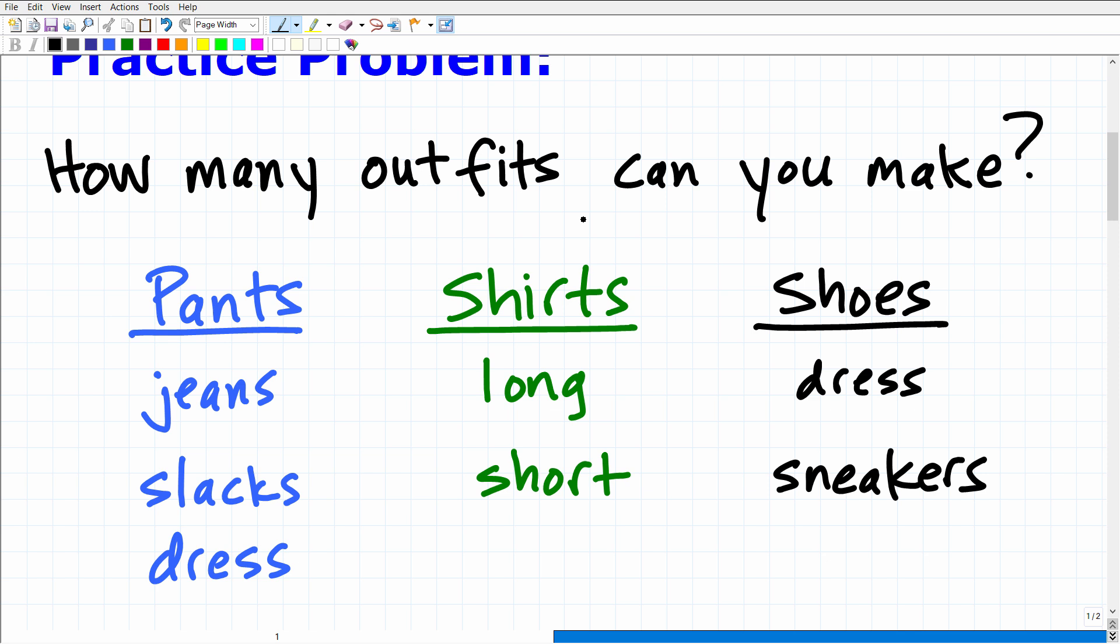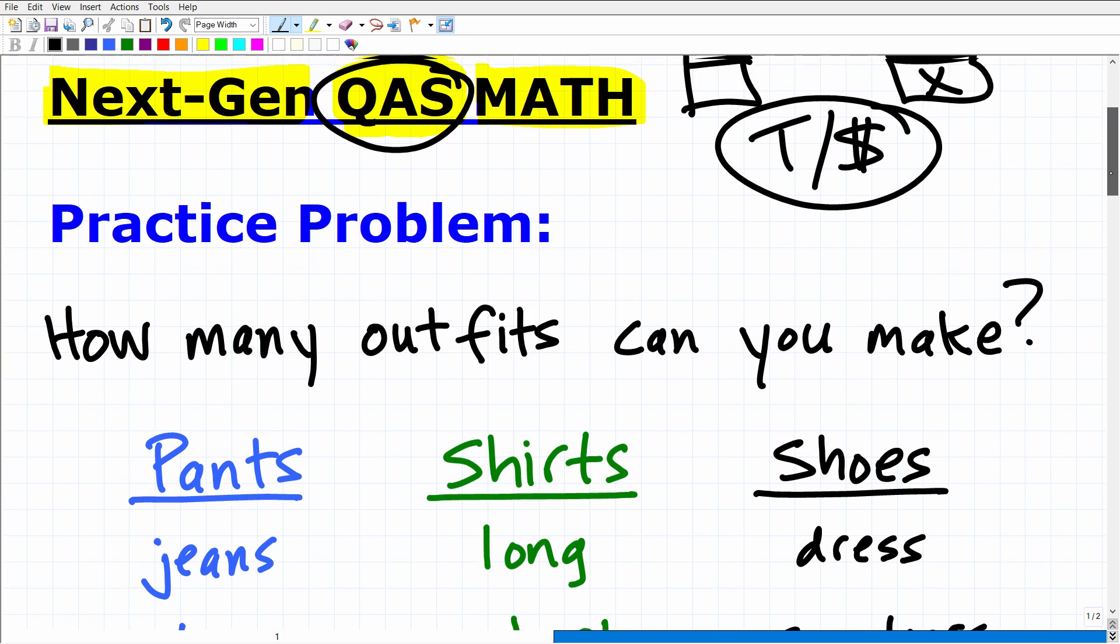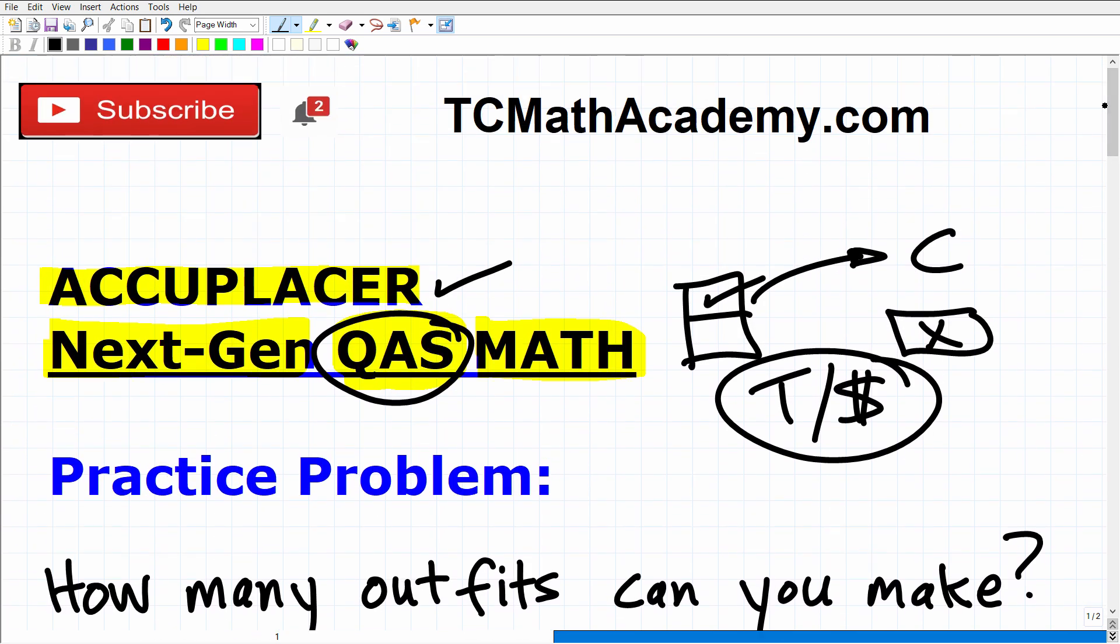The problem is how many outfits can you make given the following? You have three types of pants, two types of shirts, and two types of shoes. Go ahead and put your answer into the comment section. But try to justify your answer. This is a pretty easy problem in terms of the amount of things you have to count. I'm going to show you the right answer and explain this fully.